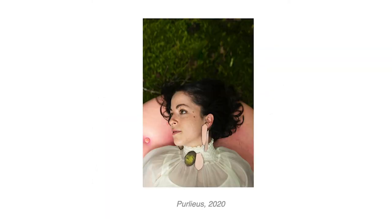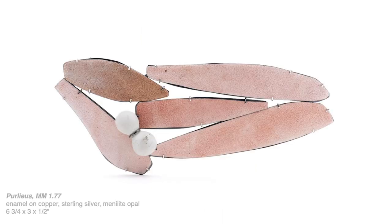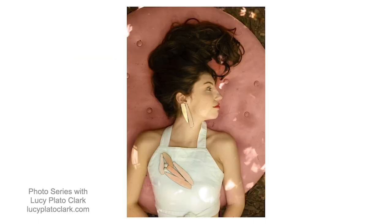These components all came together to be the final series that I will have completed here in the residency program, under the title Perleuce — the name itself means your regularly visited haunts, your frequented places. I thought it fitting for the entire series to work under this title. Each piece is named for the mile marker where I pulled these textures and colors — so this one is mile marker 1.77. The jewelry comes alive when you get to see it on the body, and so I was really excited to be able to work with Lucy Plato Clark to photograph this series on the body. We were able to shoot the work in the places that inspired the pieces, with a real focus on color and texture from beginning to end.